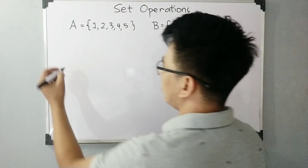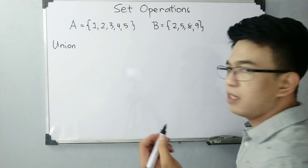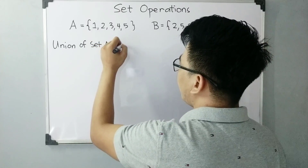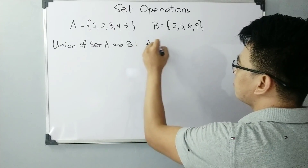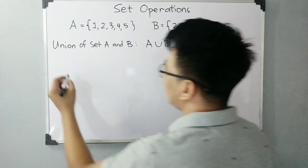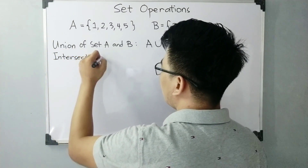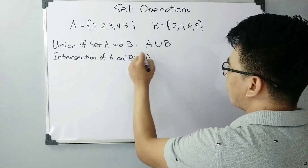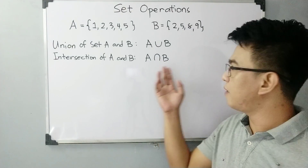Our focus now is all about union and intersection. When we talk about the union of set A and set B, it is represented by this symbol. Note that it is not 'A, U, B' — that is A union B. And as for the intersection of set A and set B, this is our symbol. We have A, inverted U, and B. This is read as A intersection B, or A intersect B.